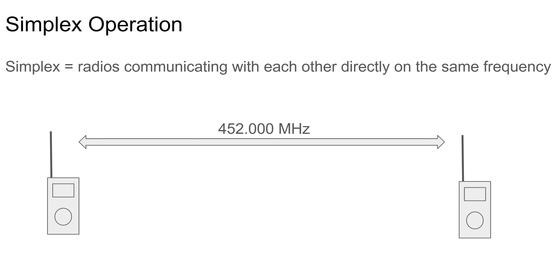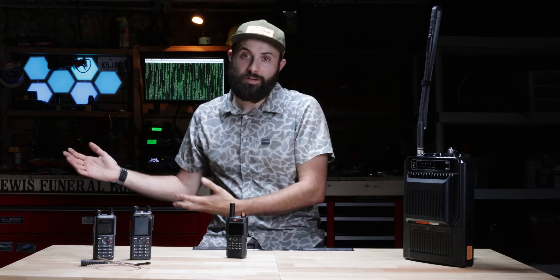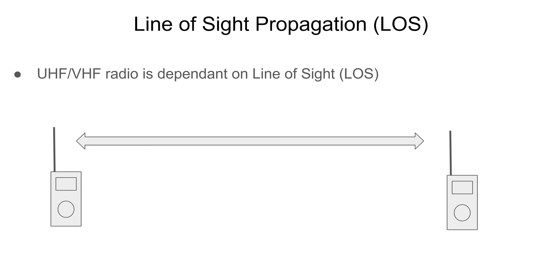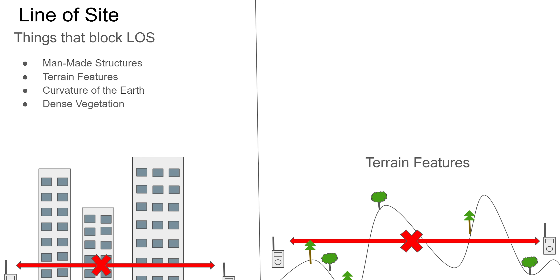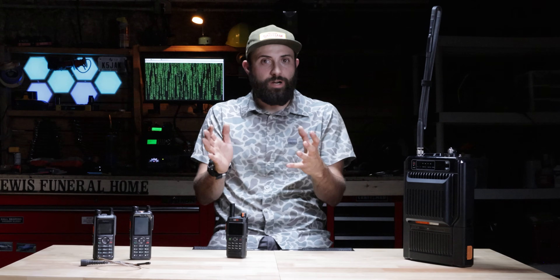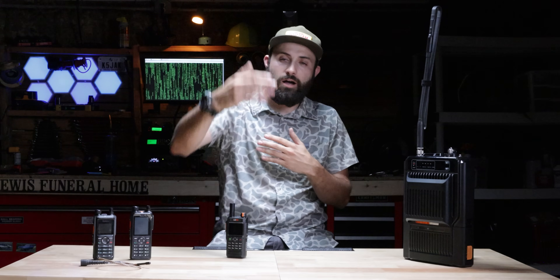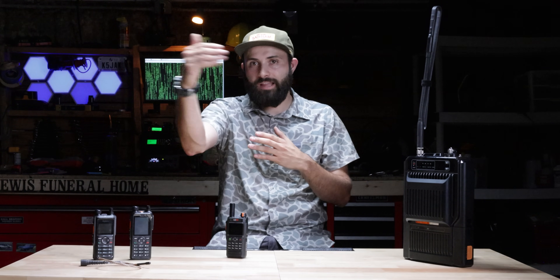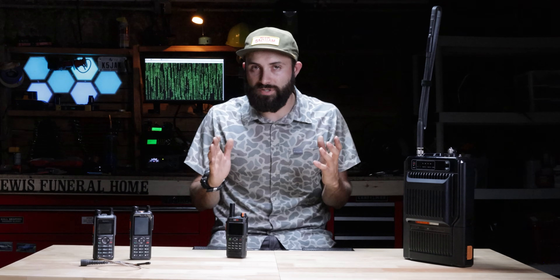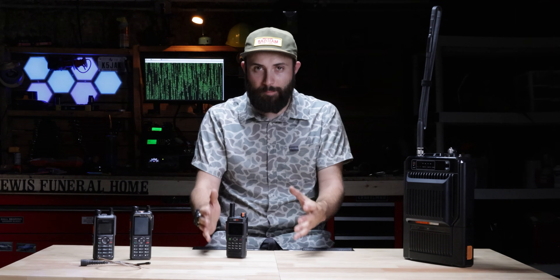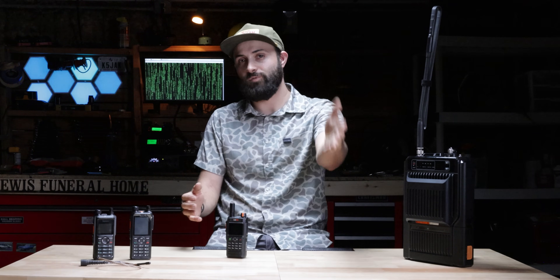Let's talk about analog simplex operation. Whether it's UHF or VHF — that's to say 400 megahertz or 100 megahertz — the radio is dependent upon line of sight. Radios can communicate when they have good line of sight. There are caveats where radio frequencies can be reflected off buildings and other objects. But for the sake of staying simple, simplex communications on analog radios are happening on the same frequency with good line of sight from radio A to radio B.